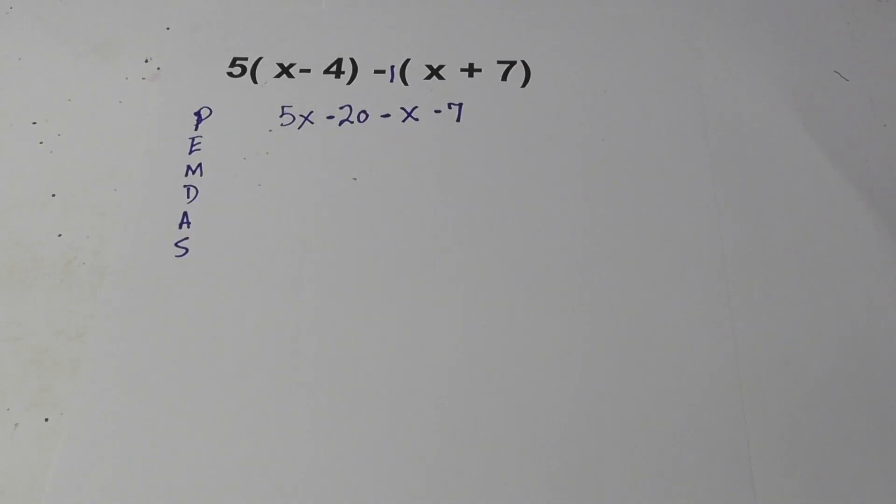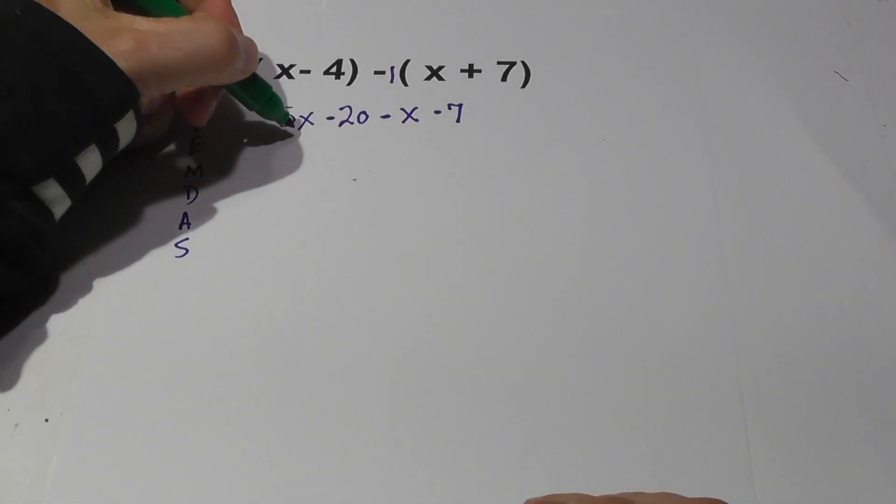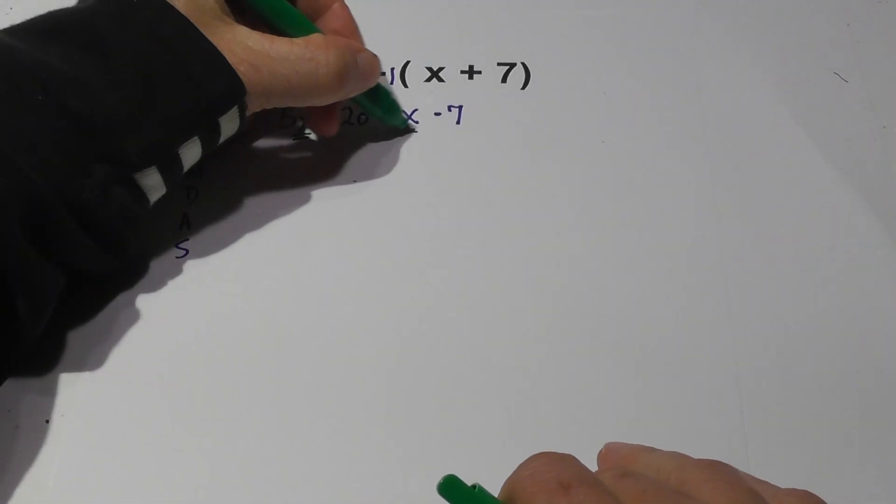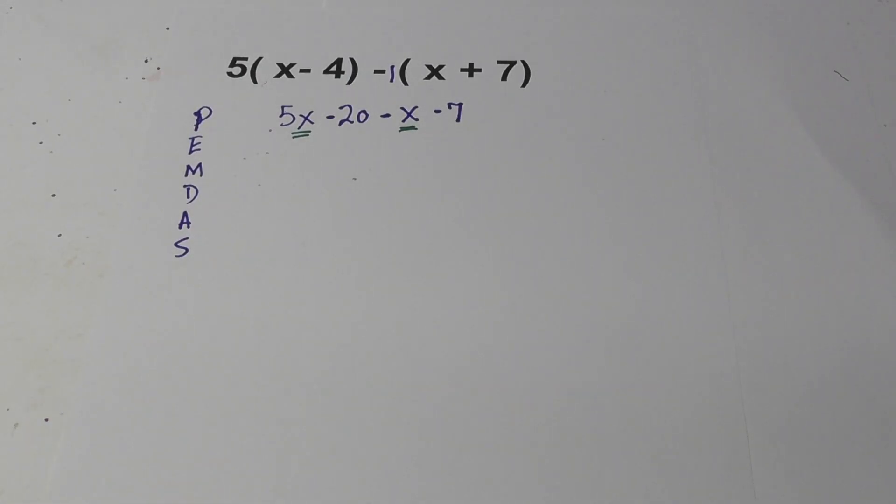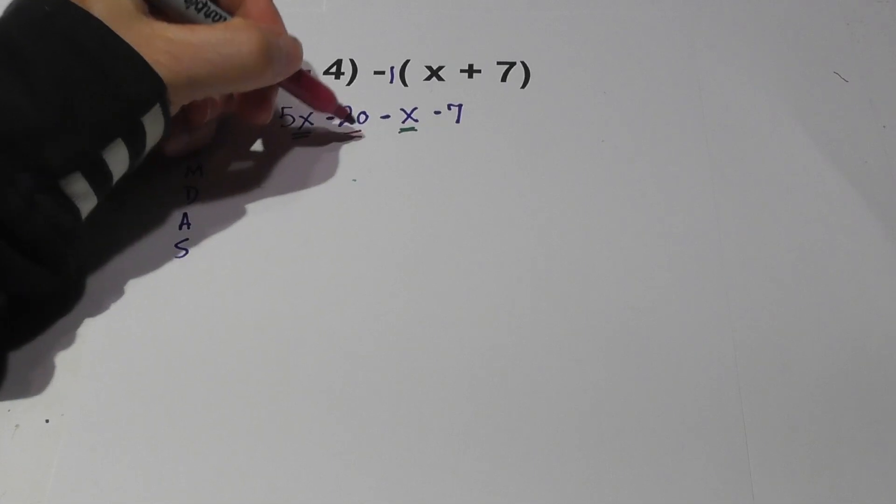Now what we do is again combine like terms. Let's see what we have here. I'm going to underline the x's in green so you can see them. And then I'm going to place the constants, or you may call them numbers, in red.